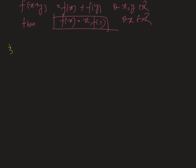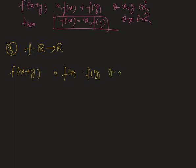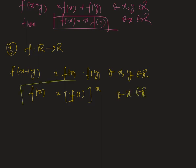Now the third result. Suppose f is a mapping from R to R, a real function given by f(x + y) = f(x) · f(y) for all x, y belonging to R, such that f(x) = f(1)^x for all x belonging to R.